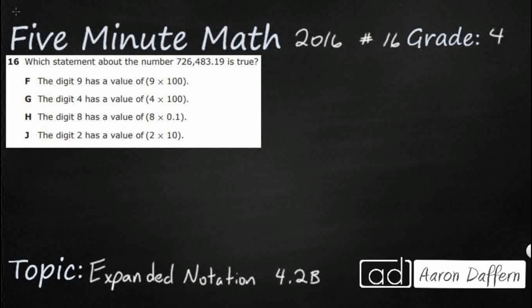So we have a statement that we need to find that is true about this number right here. We've got a pretty big number: seven hundred twenty-six thousand, four hundred eighty-three and nineteen hundredths. So let's make sure we've got that built correctly here.